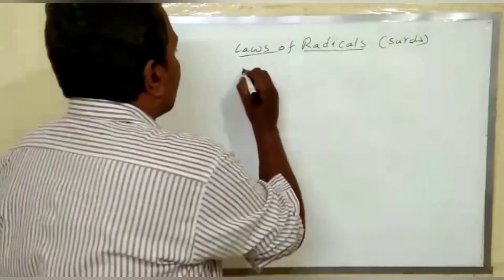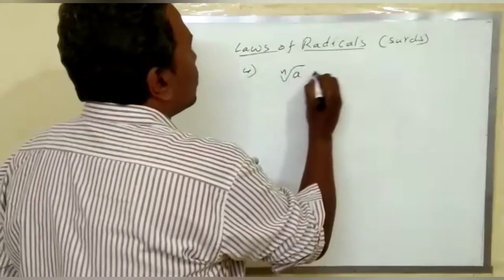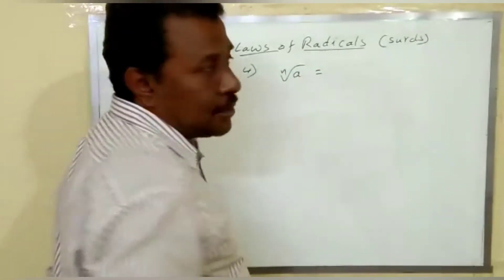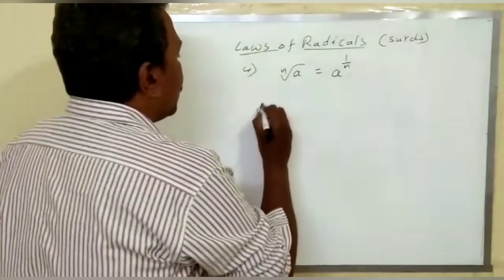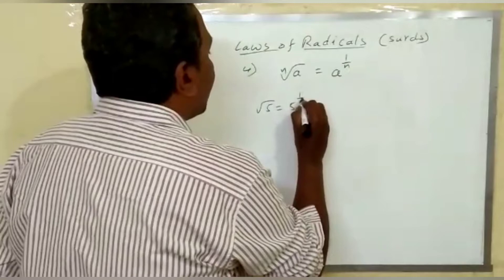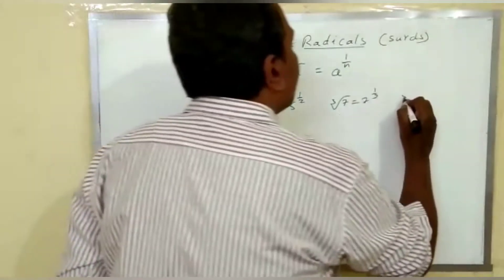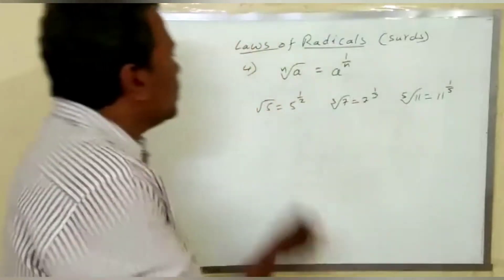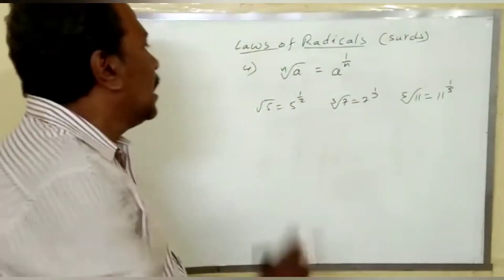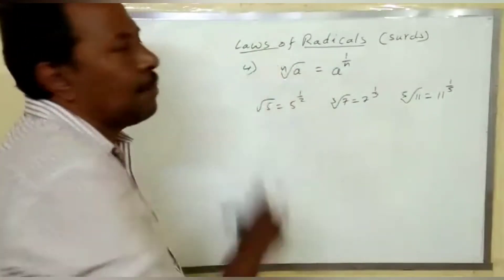Now the fourth law of radicals. The nth root of a can be expressed in exponential form as a power 1 by n. For example: square root of 5 is 5 power 1 by 2; cube root of 7 is 7 power 1 by 3; fifth root of 11 is 11 power 1 by 5. So this is the fourth law — nth root of a equals a power 1 by n.